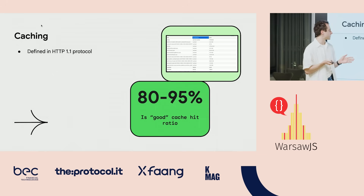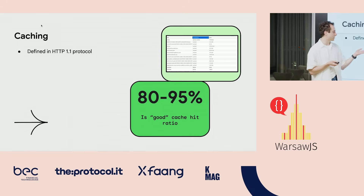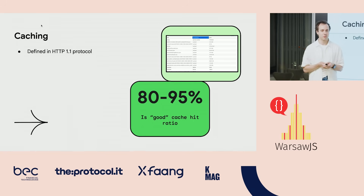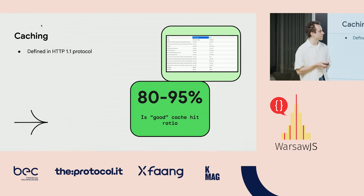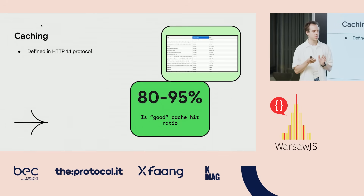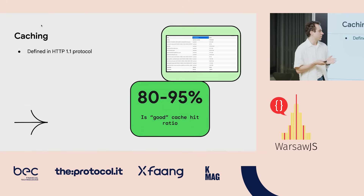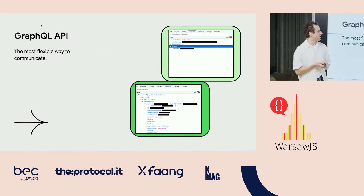Observability is more or less done for a lot of backend REST API services — it's done out of the box. I'm mentioning observability because it will be more difficult to do with GraphQL. Caching is one of the good points from HTTP protocol. An 80% or more cache hit rate is good. It's implemented most likely by the browser, and a lot of requests are cached — it's super easy to do.